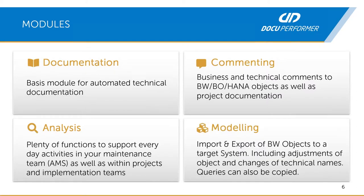The last module is modeling. With modeling you can import sub-entities into the Doku Performer, change the technical name of entities, transform old BW entities like DSO or InfoCube to RDSOs or advanced DSOs, and export them back into the same or another system. This is especially relevant for the BW for HANA migration, and we have an English YouTube video on our channel covering this.